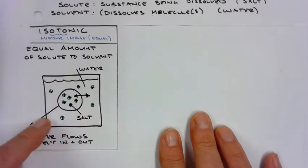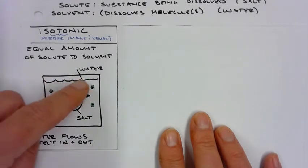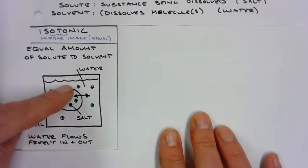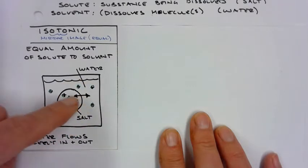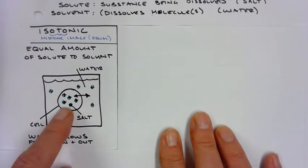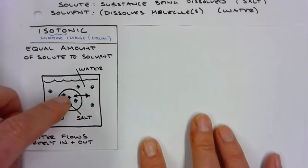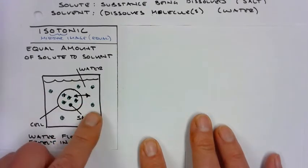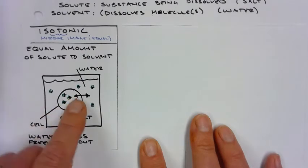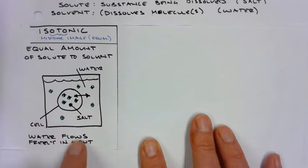What this means is that water flows evenly inside and out of the cell. So for example, this is a container of water. The liquid behind here is water. This is my cell, and these little greenish molecules represent salt. There are equal number of salt molecules inside as there are outside, and so water just freely flows in and out at equal amounts. This cell will not change.